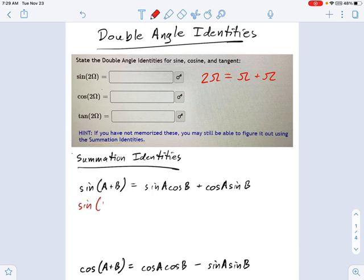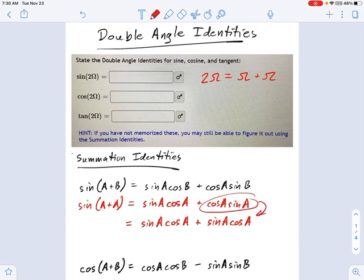So I'm going to say sine of A plus A. And now we plug in A everywhere we see a B in this thing. So that's going to be sine A cos A plus cos A sine A. And now I just want to point out that sine times cos is the same as cos times sine. There's a commutative property of multiplication, which means we can rewrite this as sine A cos A plus sine A cos A. See what I just did right there? Now that's useful because we can combine like terms.